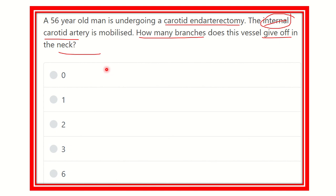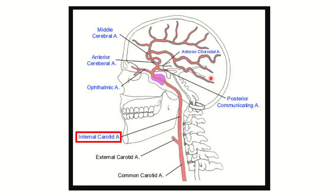Here we can see the common carotid artery, which divides into the external carotid artery and internal carotid artery. The internal carotid artery runs upward and enters into the cranial cavity. From its origin up to the skull base, we can see no branches of the internal carotid artery in this region.